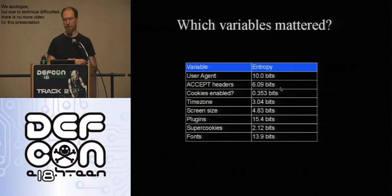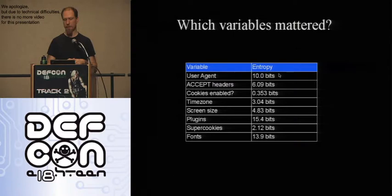If we look at the variables we mentioned — we had these eight measurements — which ones were the problematic ones? This table measures to first order which they were. User agent is pretty bad — it's ten bits of information. Every time you log into a web server, the server logs the user agent, and you expect on average that you're narrowing the population down to one-thousandth of what it could have been for someone who wants to browse anonymously.